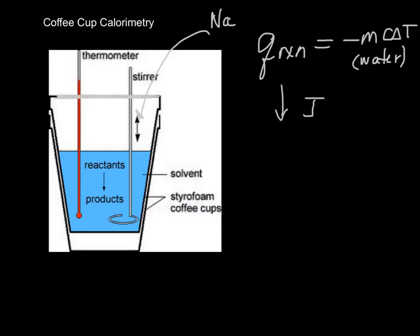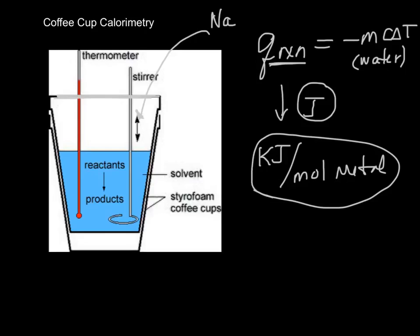We usually, though, we want to change it to kilojoules per mole, and the moles are of the metal. So, we want to know if, obviously, if I used more sodium, I'd get more heat. So, when it's in joules, we call it Q. When it's in kilojoules per mole, we give it a different name. And this is called delta H.